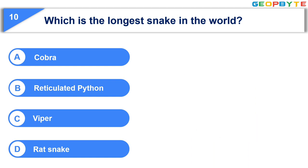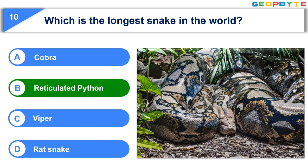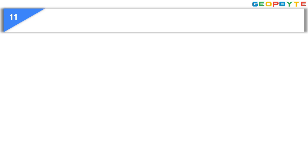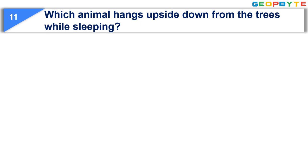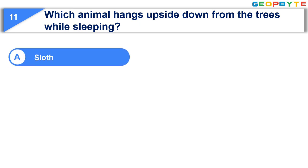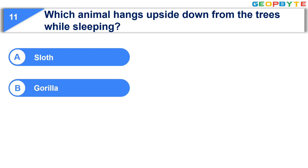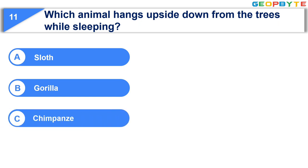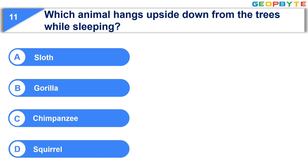Your time is up and the correct answer is Option B: Reticulated python. Moving to the next question: Which animal hangs upside down from the trees while sleeping? Option A: Sloth. Option B: Gorilla. Option C: Chimpanzee. Option D: Squirrels. Your time starts now.